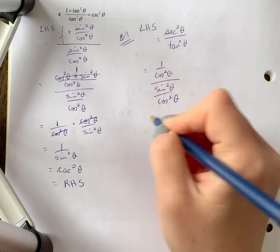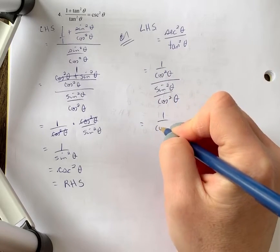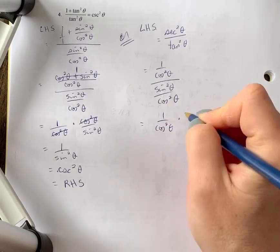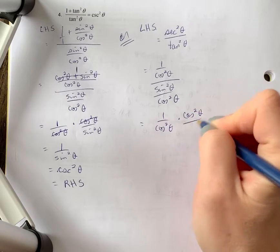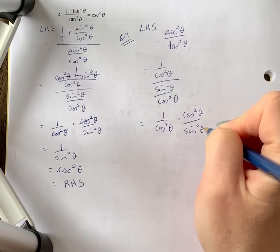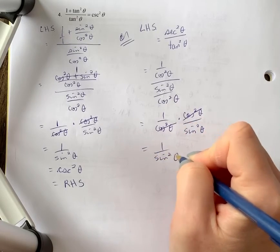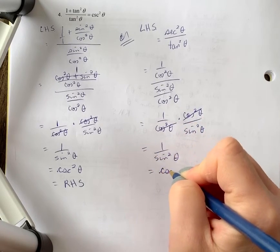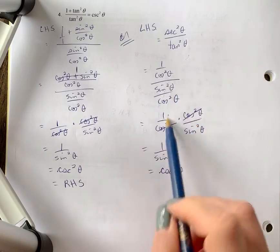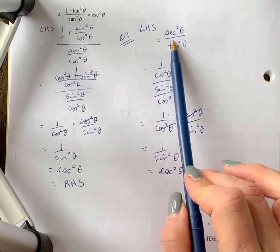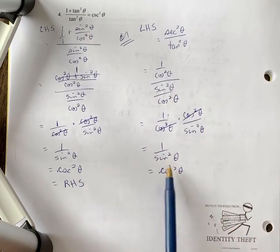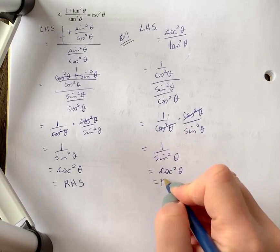So those cancel and I get one over sine squared theta, and it equals cosecant squared theta. So I get there a little bit faster, but maybe you didn't think of that method right away. It's not going to matter as long as you get the right pathway. We still have our right-hand side.